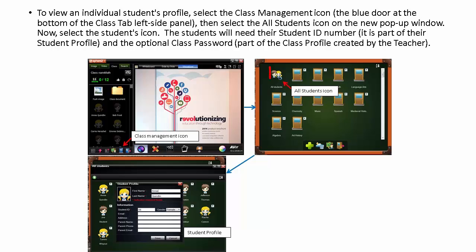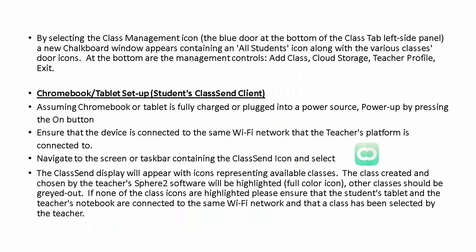Then select the All Student icon on the new pop-up window. Now select the Students icon. The students will need their student ID number and the optional class password if that was provided by the instructor. By selecting the Class Management icon, a new chalkboard window appears containing an All Students icon along with the various class door icons. At the bottom are the Management Controls: Add Class, Cloud Storage, Teacher Profile, and Exit.